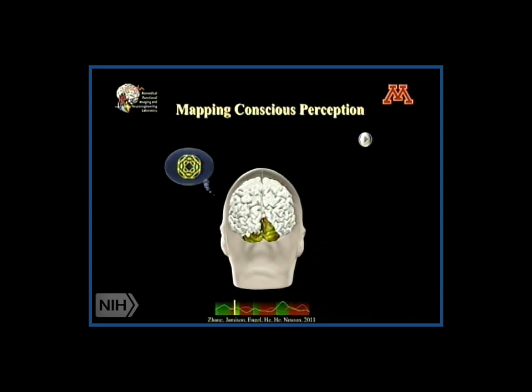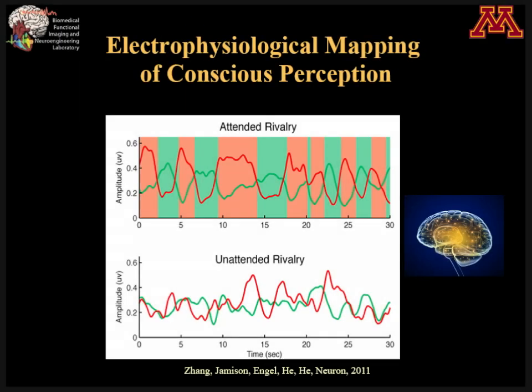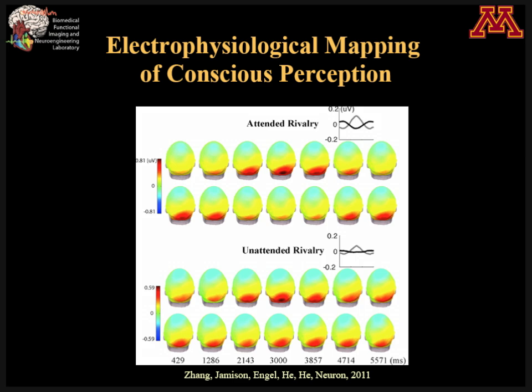EEG has low spatial resolution, but by solving the source imaging problem, we can map out cortical activation corresponding to this EEG recording. Here you can see two charts — one green, one red — showing the green and red perception segments respectively. One conclusion from this electrophysiology study is that when subjects are paying attention, you can see counter-phase modulation between these two rivalry stimuli. But if a subject does not pay attention, such rivalry is not going to show up — both in the time domain and in the space domain.